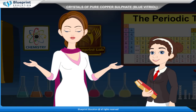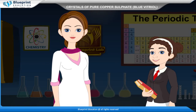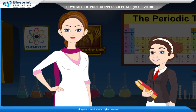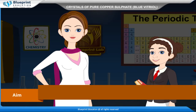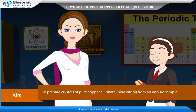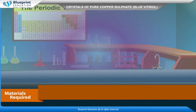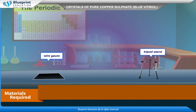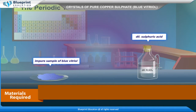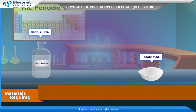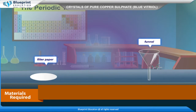Let's do an experiment to prepare crystals of pure copper sulfate, blue vitriol, from an impure sample. Materials required are: beaker, Bunsen burner, wire gauze, tripod stand, impure sample of blue vitriol, dilute sulfuric acid, concentrated H2SO4, china dish, filter paper, and funnel.